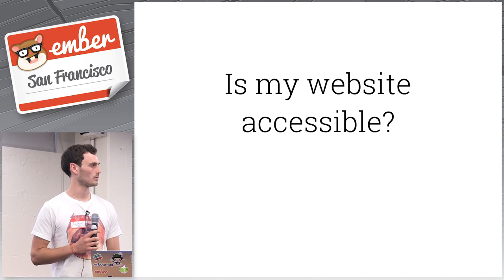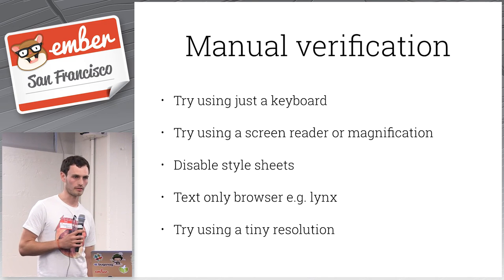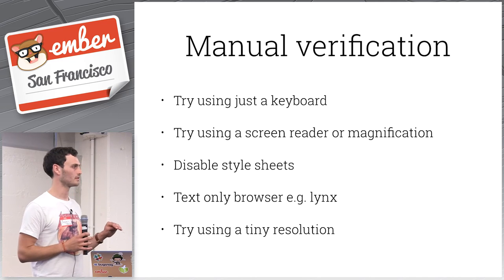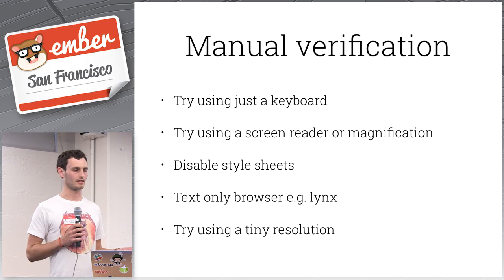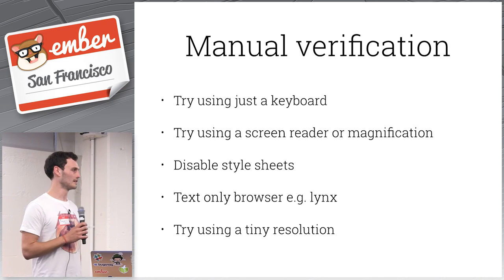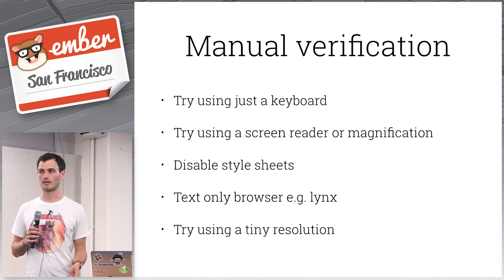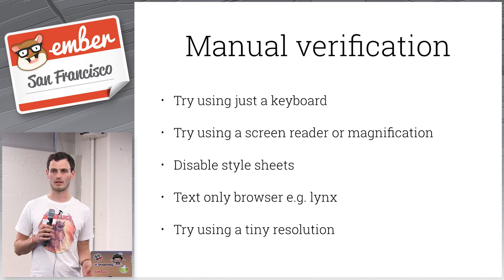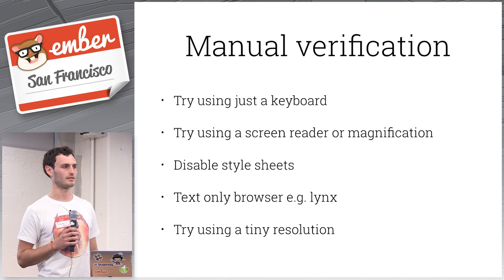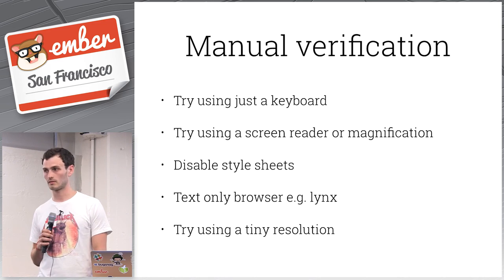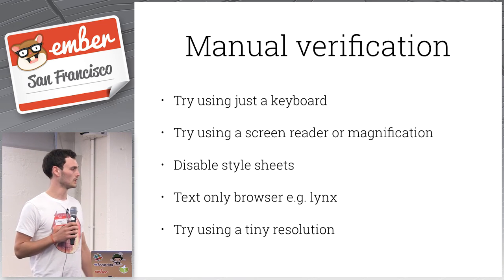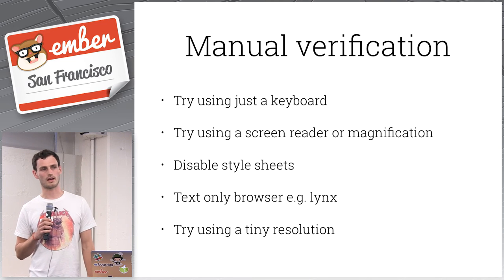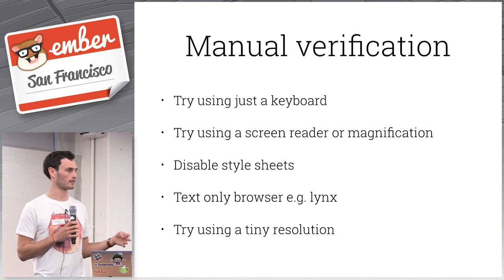On working out if your website is accessible: you can manually verify things with varying degrees of effort. One option: try navigating with just a keyboard, put your mouse aside. Screen readers are actually really easy to turn on in macOS and on iPhone — probably Android too. Just try it out, see what the navigation flow feels like. Even doing it once, you'll very quickly see it's really painful. Try disabling style sheets — is the order of content sensible?